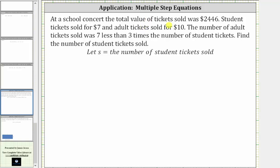At a school concert, the total value of tickets sold was $2,446. Student tickets sold for $7, and adult tickets sold for $10. The number of adult tickets sold was seven less than three times the number of student tickets. We're asked to find the number of student tickets sold.